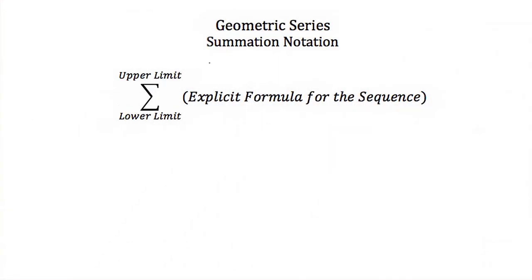Sometimes you'll see a geometric series written in summation notation, indicated by the summation sign (sigma). Above the summation sign is the upper limit, which is the number of terms we're adding together, or the maximum value of n. The lower limit, or the number underneath the summation, is usually 1 — written as n equals 1. This is the beginning value of our summation.